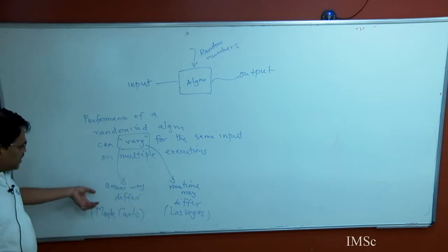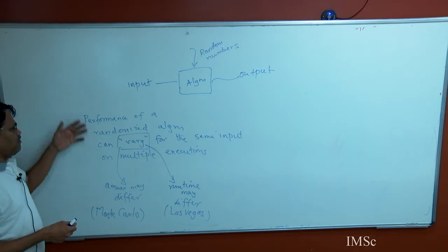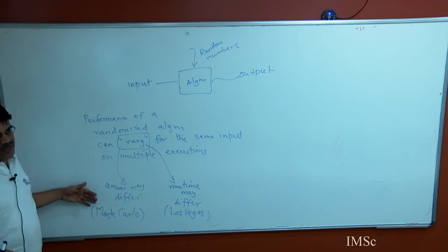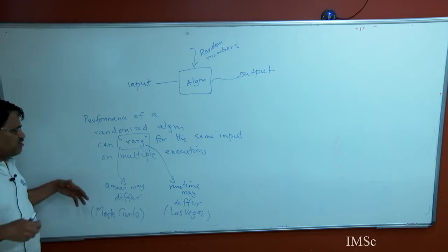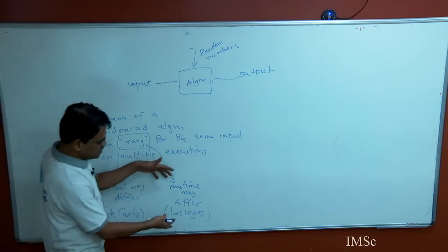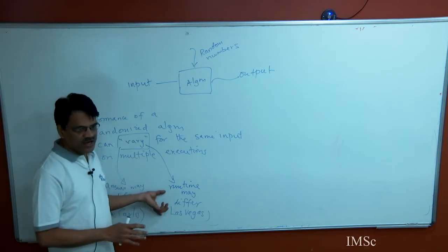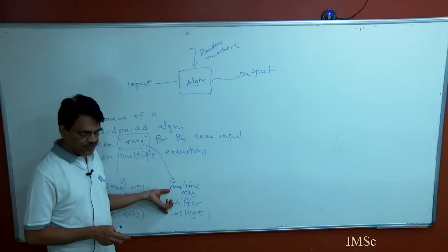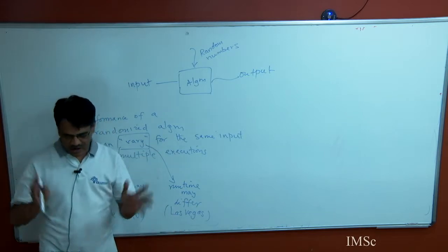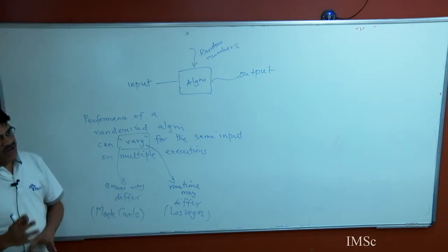For Las Vegas algorithms, we want to analyze the running time. The algorithm's running time may not change but the answer may change — so there we want to analyze success and failure probabilities. Here, the answer is always correct, so we want to argue that 99 percent of the time the algorithm will actually run fast. Today, we look at a couple of examples of this kind of Las Vegas algorithm: it uses randomization, gives you the correct answer all the time, and the time may vary — we will analyze the time.